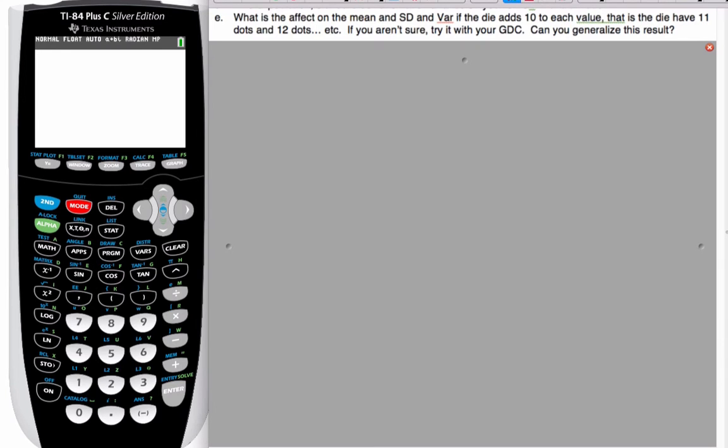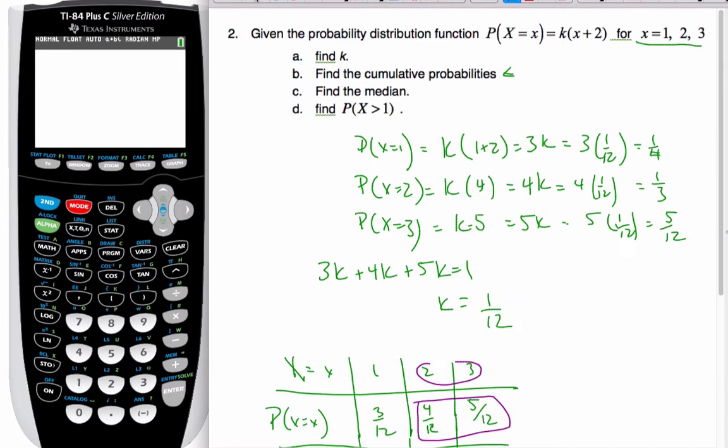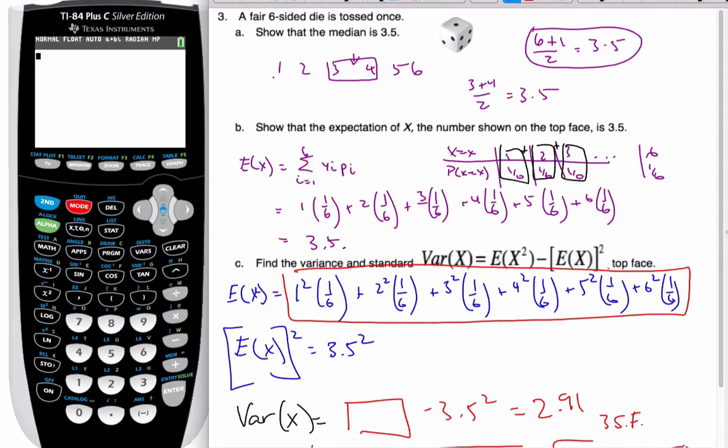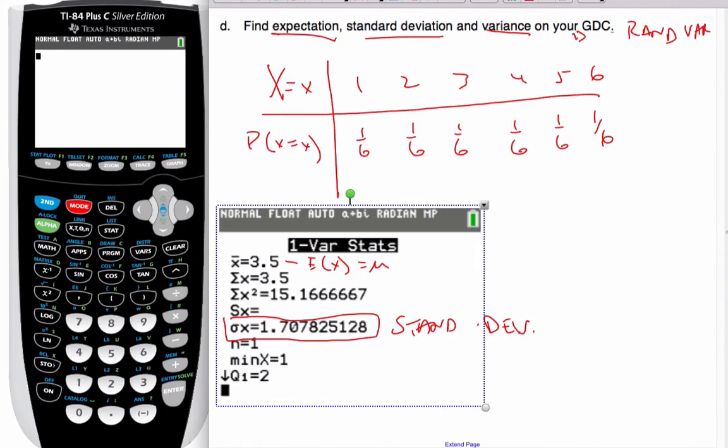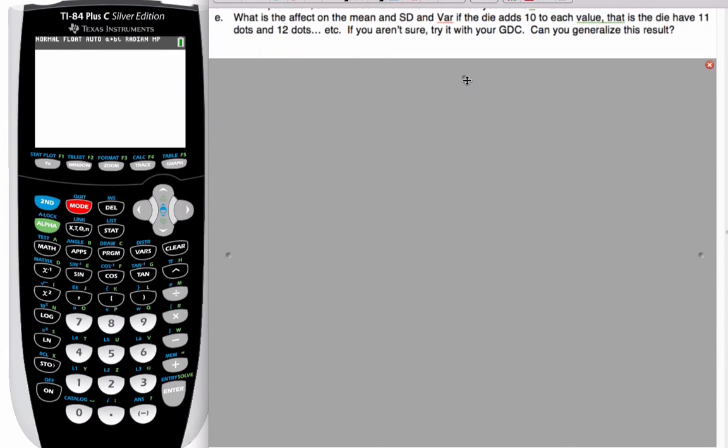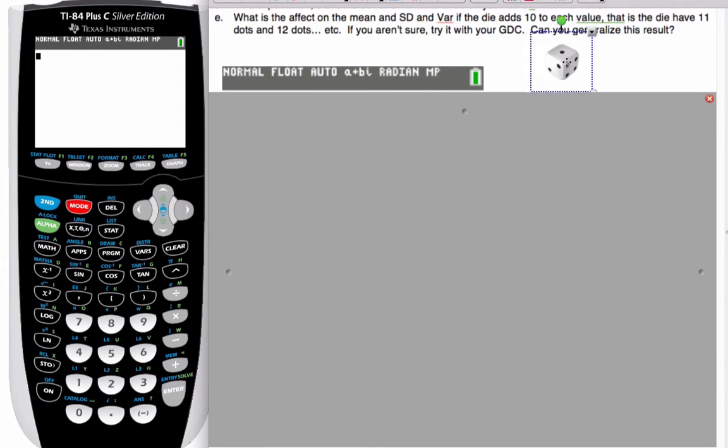So what that's talking about is if we imagine this die here, if I imagine that die and on this die as opposed to there being one dot I'm going to add 10 more dots in here. So there would be 11 on top. The four would end up being 14. This would be 12 and so on. So I add 10 to each value. What's the effect going to be on the mean and the standard deviation of the die?